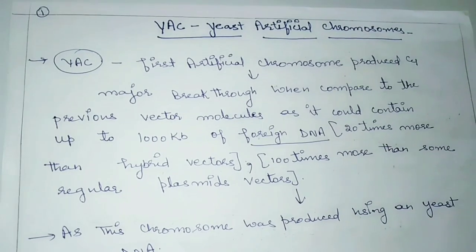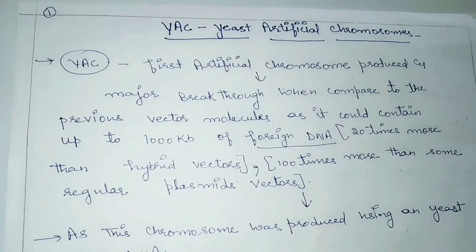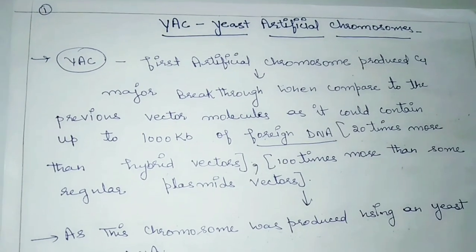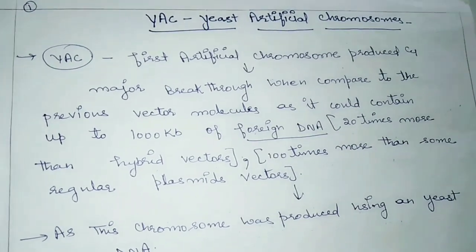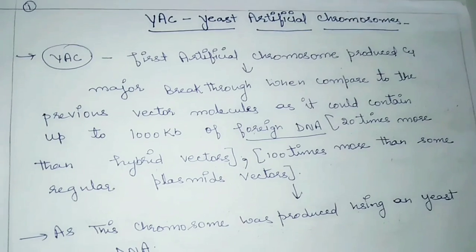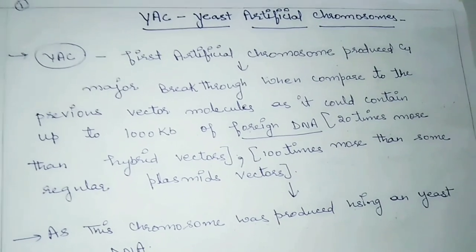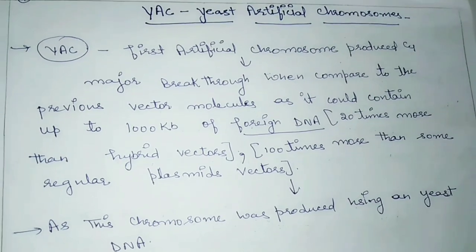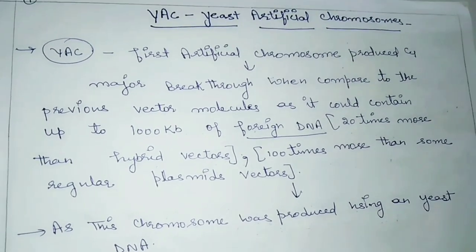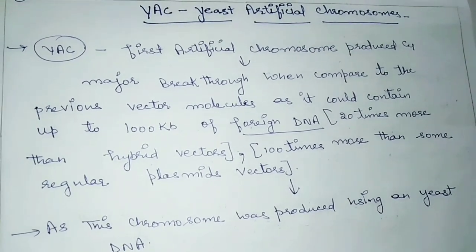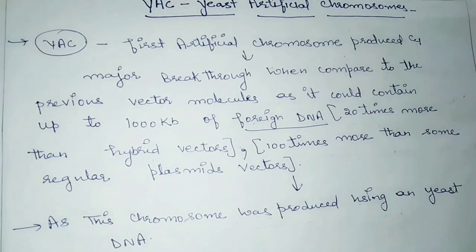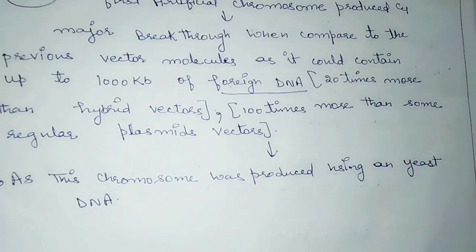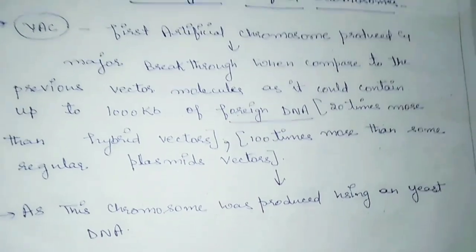YAC can contain up to 1000 kb of foreign DNA, which is 20 times more than hybrid vectors like cosmid and plasmid vectors, which are normal and regular vectors. This chromosome was produced using yeast DNA, and that is why it is called the Yeast Artificial Chromosome. This is the first type of artificial chromosome.